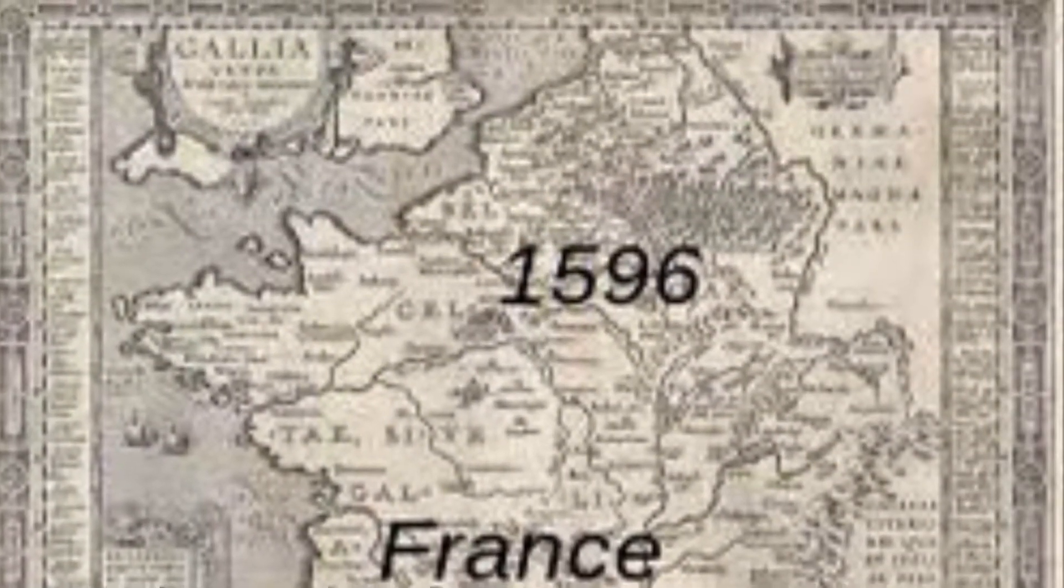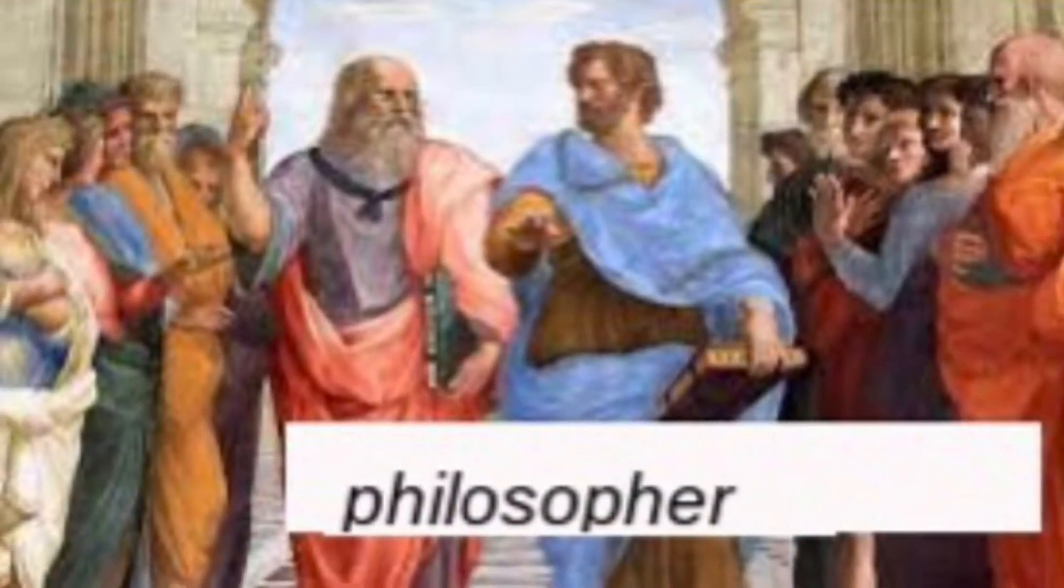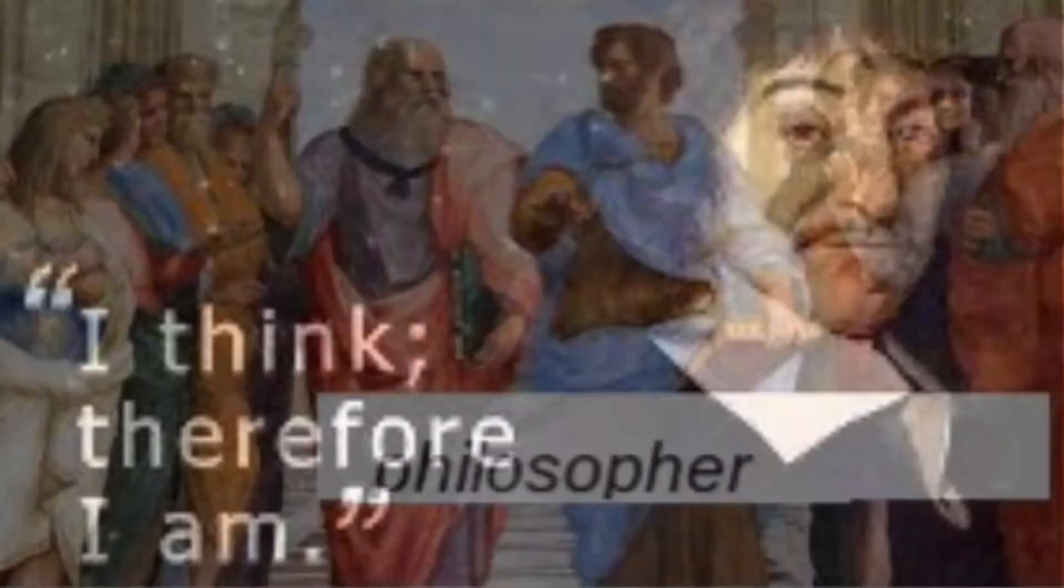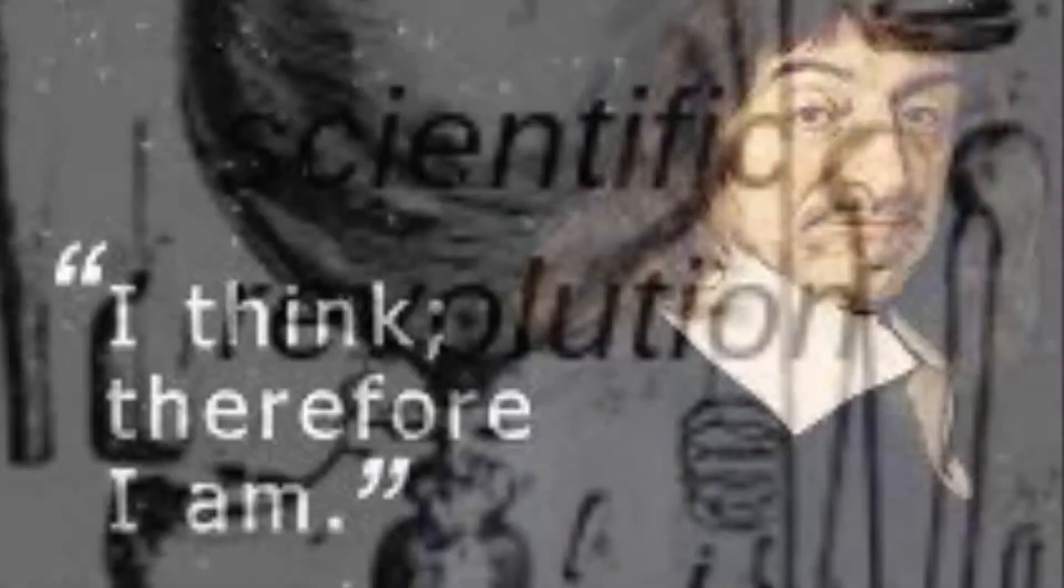So where did he come from? René Descartes was born in 1596 in France but worked for the Dutch Republic. He was a mathematician, scientist and philosopher, known for his discoveries in these subjects, advancements in modern Western philosophy and existential quotations like 'I think therefore I am.'